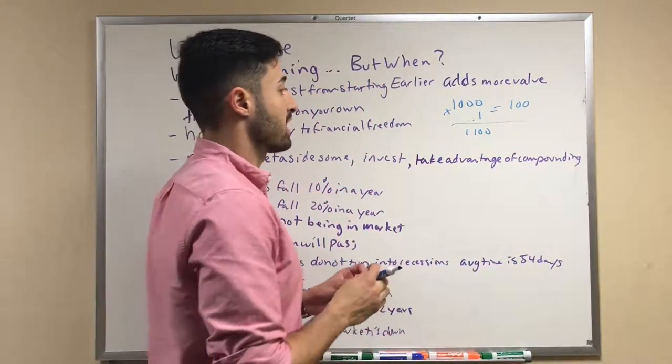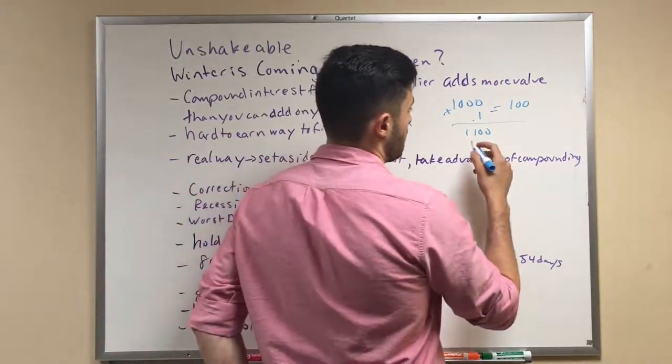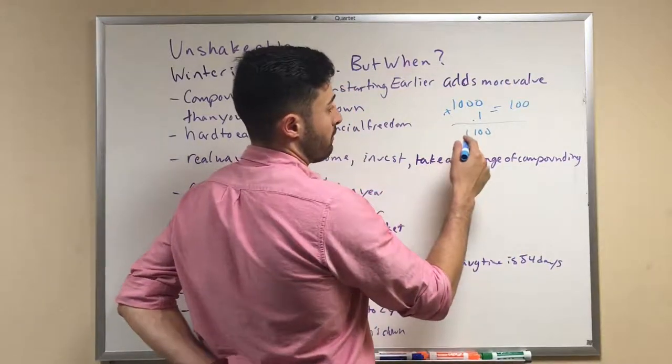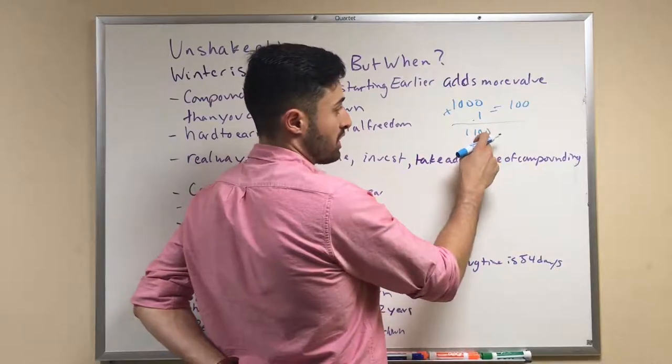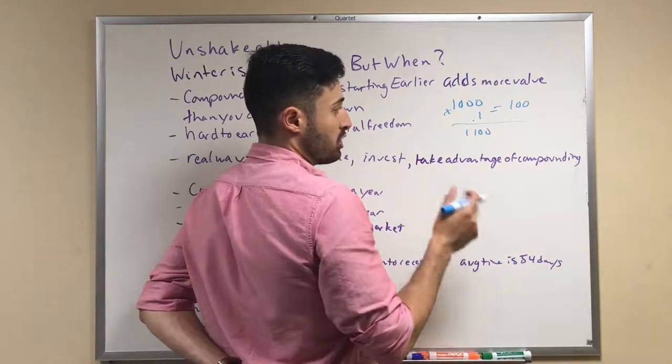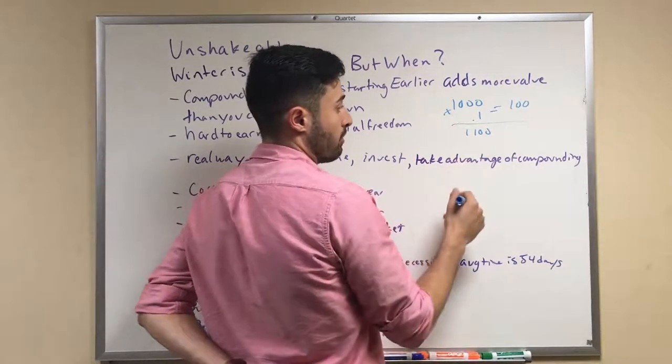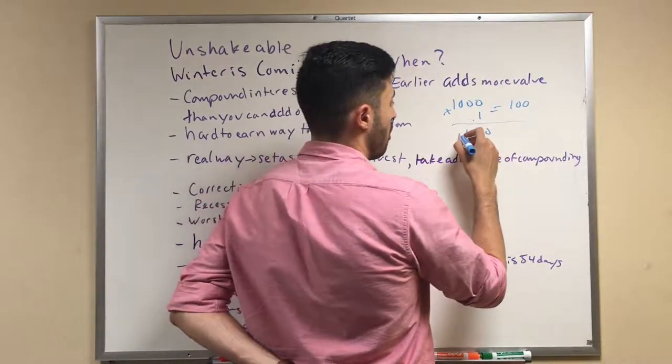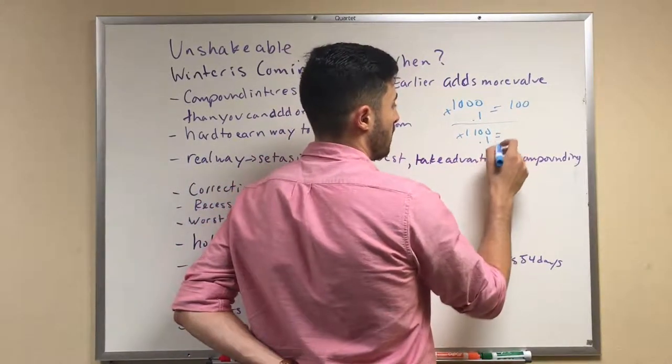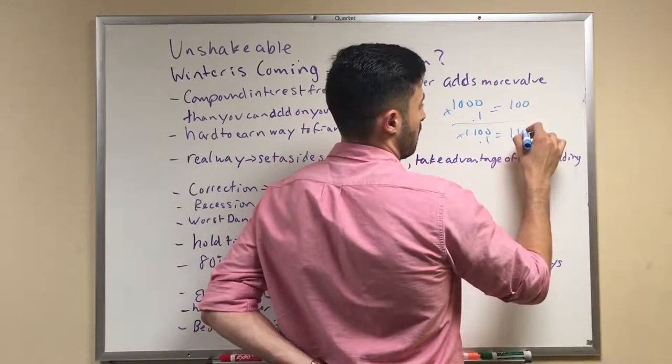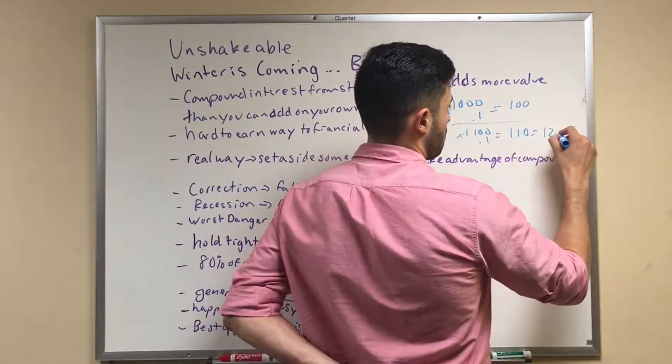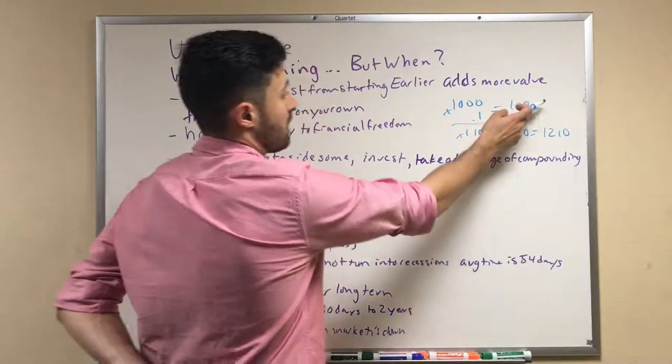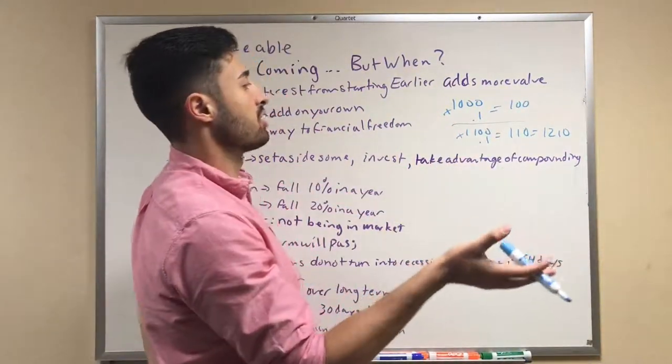Now in the second year, if you're still making 10%, you're now making money off of the $1,000 you originally put in plus the $100 that you made from just having it there. So when you multiply this by 0.1, that equals $110. So now you have $1,210. Now that $100 you made last year made you $10 extra by doing absolutely nothing but holding the money there.